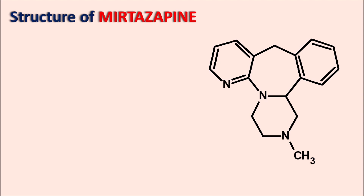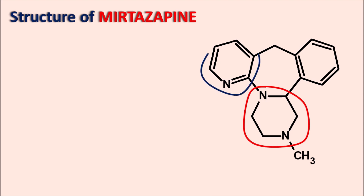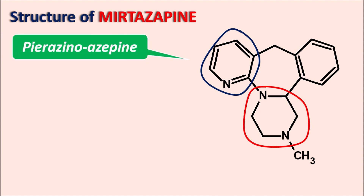What is the ring system present in Mirtazapine? This structure contains two individual heterocyclic ring systems. One ring system with two nitrogens is the piperazine ring system, and another ring system with one nitrogen is the pyridine ring system. The piperazine is attached with a seven-membered nitrogen-containing ring system. Here 'aza' indicates nitrogen and 'epine' indicates a seven-membered ring system. So 'azepine' indicates a seven-membered ring with a single nitrogen, fused with the piperazine ring — giving Mirtazapine a piperazino-azepine ring system.